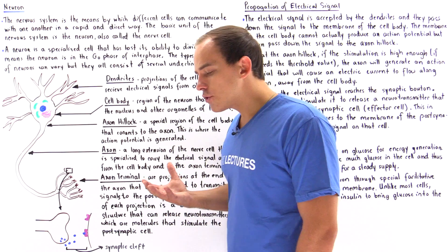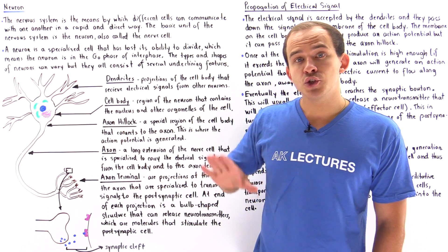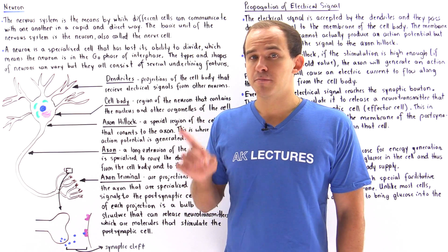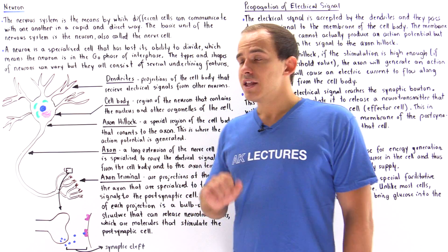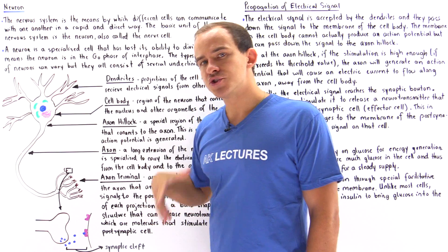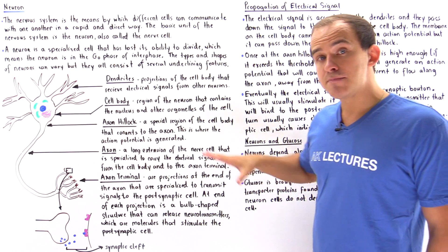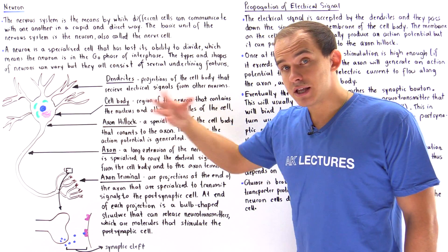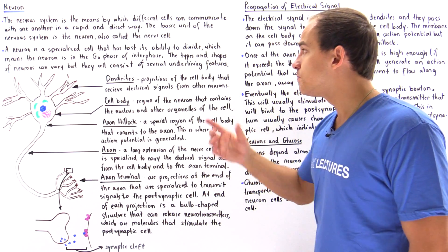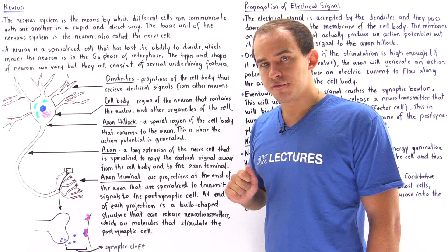A neuron is so specialized that it lost its ability to divide, so a neuron cannot divide via mitosis, and that implies that a neuron is always in the G0 phase of interphase. Although the size and shape of neurons in the body can vary from one location to another, they all consist of several important features.